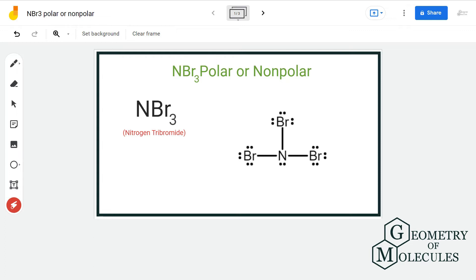Because of this lone pair, this molecule is no longer symmetrical. Now the electronegativity of nitrogen is 3 and that of bromine is 2.9. When we calculate the difference, we get the value of 0.1. Thus we